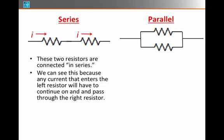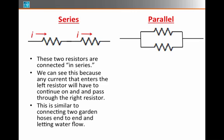So by series, we mean the current has to pass through one and then through the other. This is similar to connecting two garden hoses and then allowing water to flow. The two garden hoses will be in series, one after the other, and water will have to go through both in order to get out.